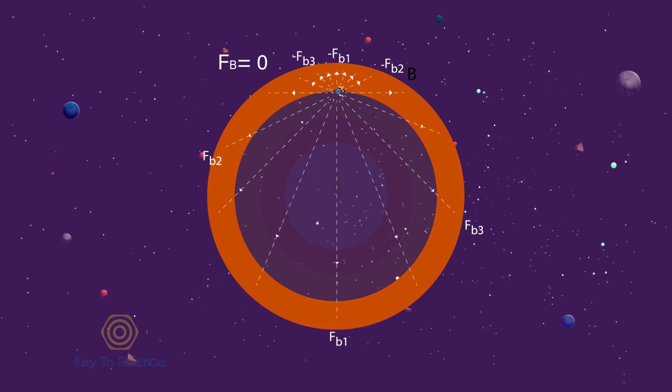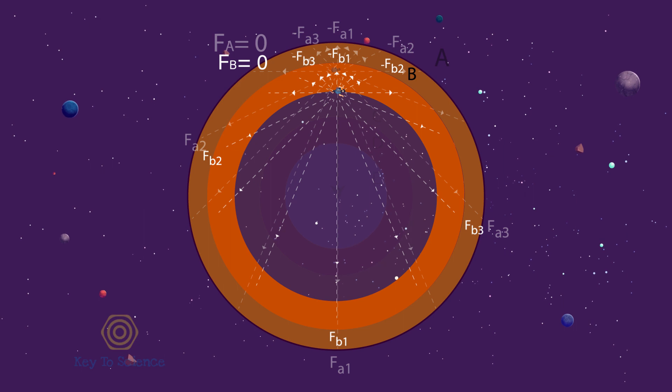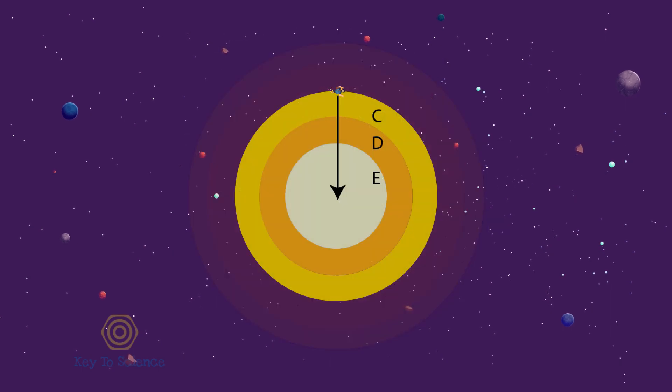As a result, the total force exerted on us by shell A and shell B will be zero. Their attractions will no longer influence our motion. Only the shells C, D, and E will be pulling us to the centers.